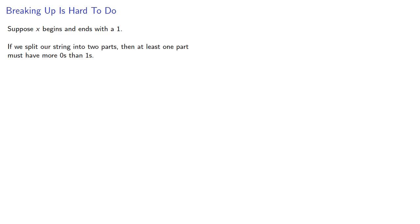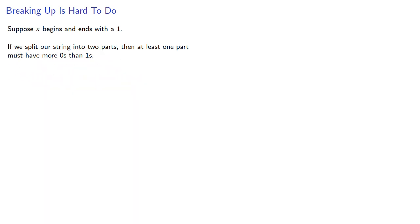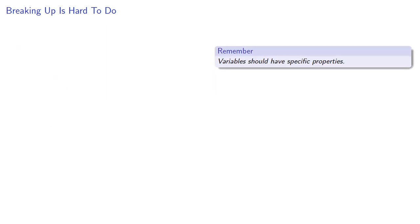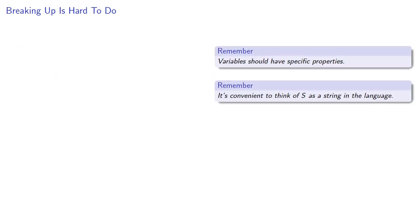Suppose x begins and ends with a 1. If we split our string into two parts, then at least one part must have more 0s than 1s, so it will be in our language. This suggests a rule like S produces either a string followed by a string of the language, or a string of the language followed by some new variable. Again, variables should have specific properties, and it's convenient to think of S as a string in the language.